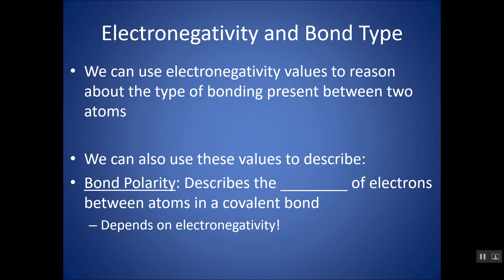Bond polarity describes the sharing of electrons between atoms in a covalent bond. If you see the word covalent, that means you have a sharing. But this type of sharing is not always equal, and that gives way to bond polarity. This is going to depend on electronegativity.